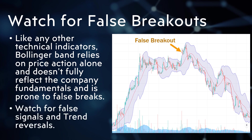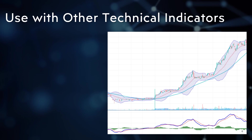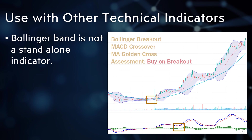Also watch for signals of trend reversals. Bollinger Bands are not a standalone indicator — use them along with other technical indicators and tools. In this example, the price breaks above the Bollinger Band while the MACD shows a crossover and there is already a golden cross among the MAs. Therefore, a trader should buy on the breakout.